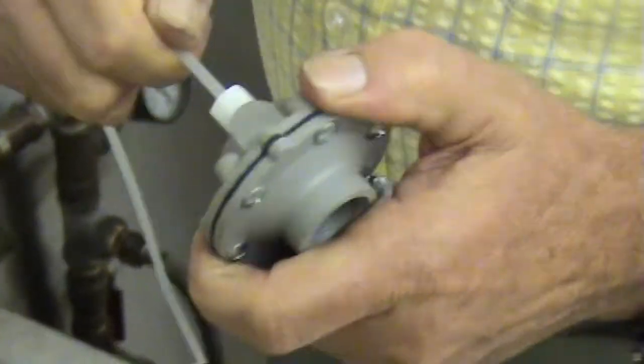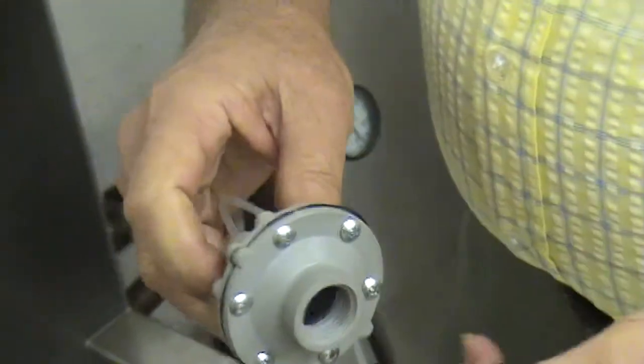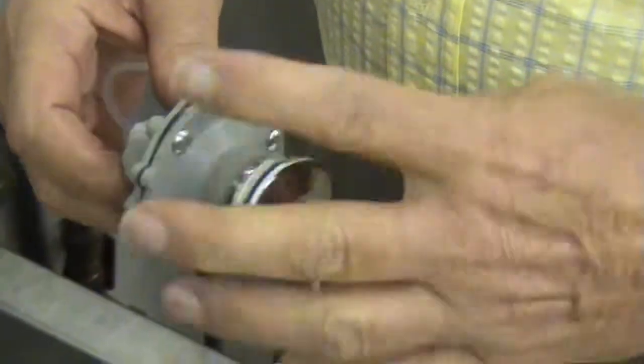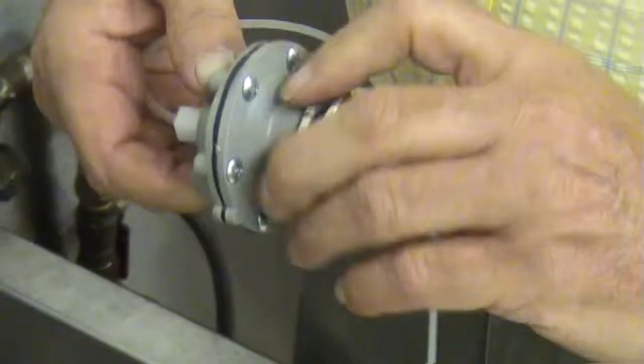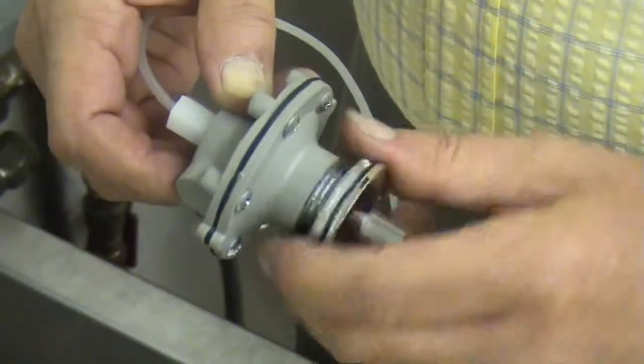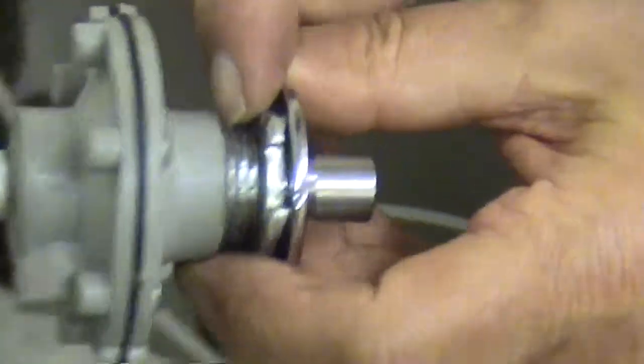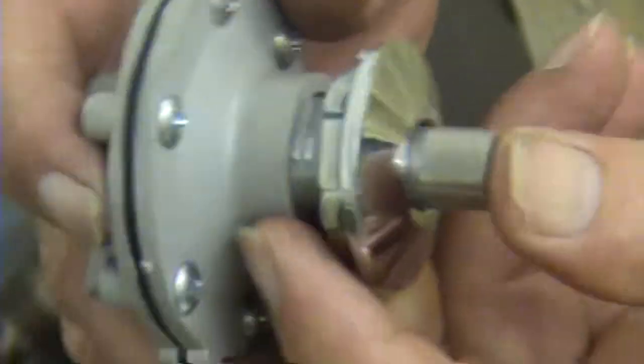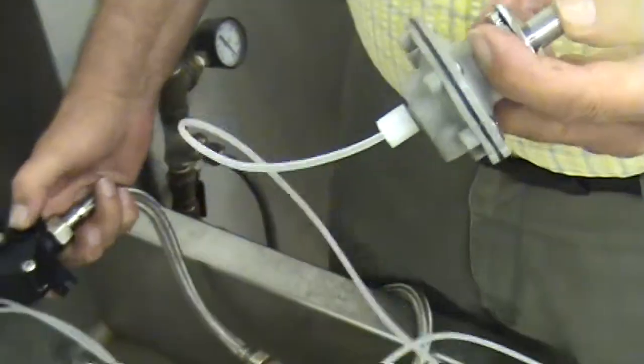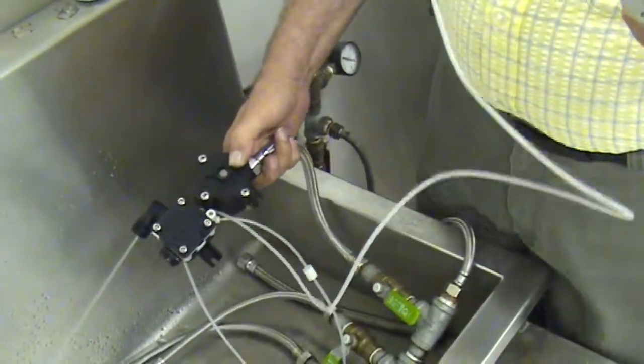When you're finished, it should be held in there firmly. Of course you mount it back to your button. Get your shoulders on your button and the diaphragm pod up close together. That gives you maximum throw of your push button. Once you've replaced the diaphragm, your valve should come on and work perfectly.